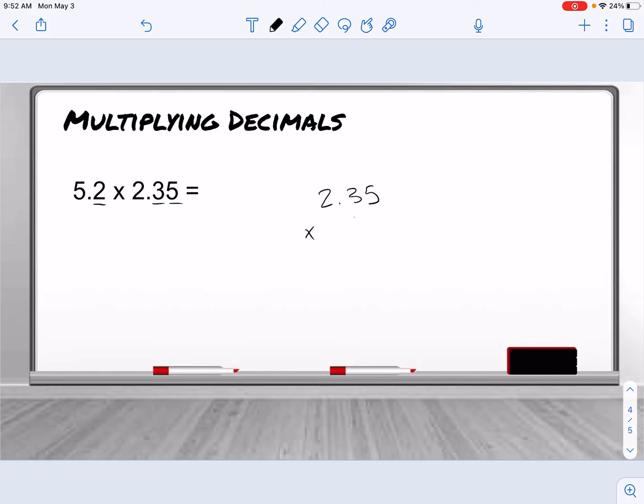So when I set this up, I'm going to put the number with the most digits on top. I don't have to line them up. I can just start multiplying. 2 times 5 is 10, so I carry the 1. 2 times 3 is 6, plus 1 is 7. 2 times 2 is 4. I'm done with the 2.